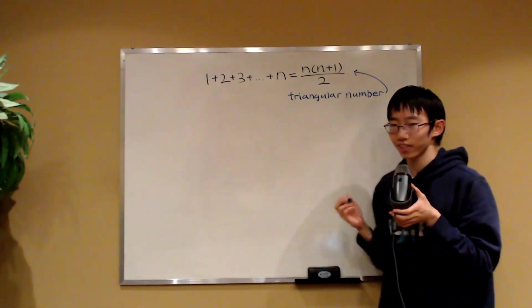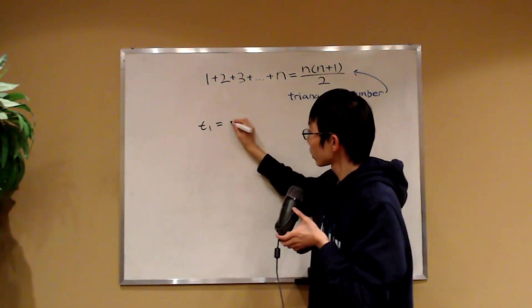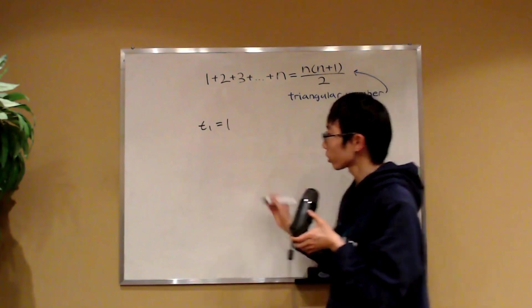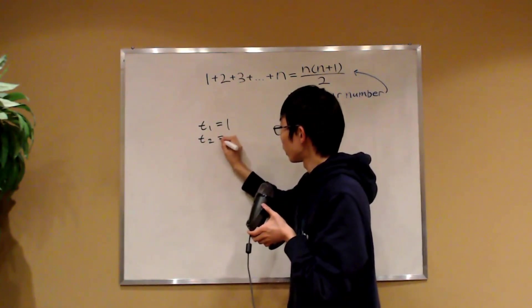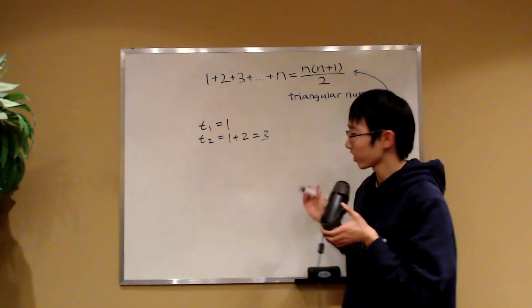So I'll give a few examples. The first triangular number, t1, is just equal to 1. The second triangular number, t2, is equal to 1 plus 2, that's equal to 3.